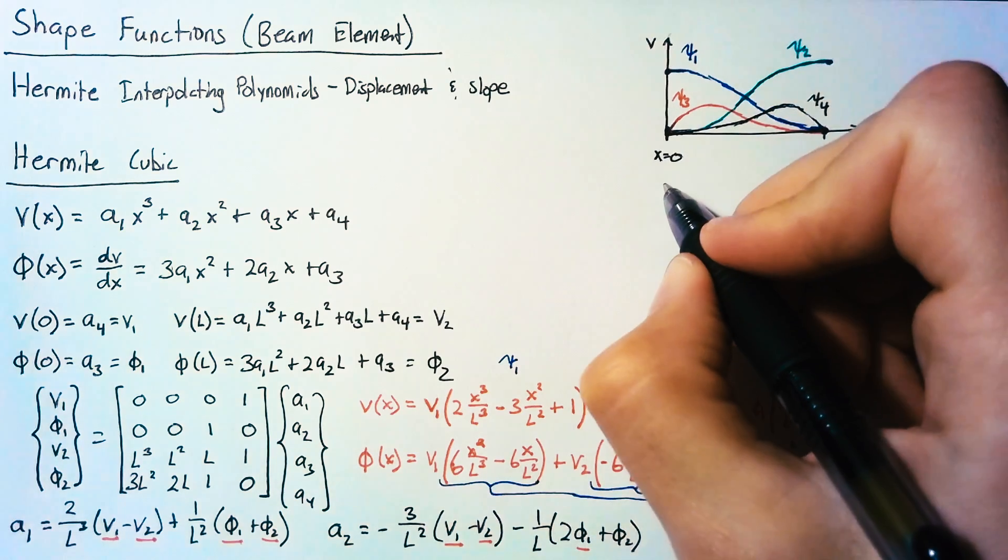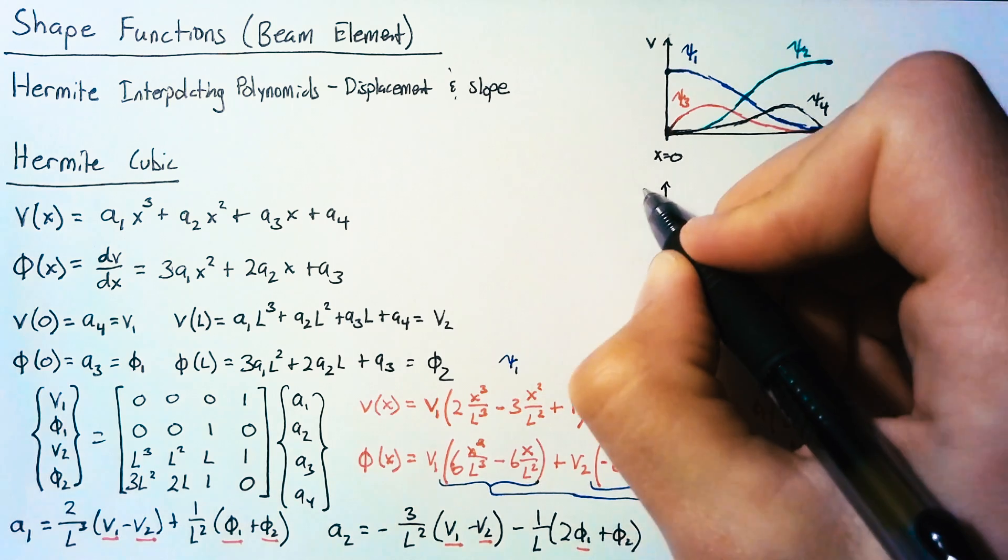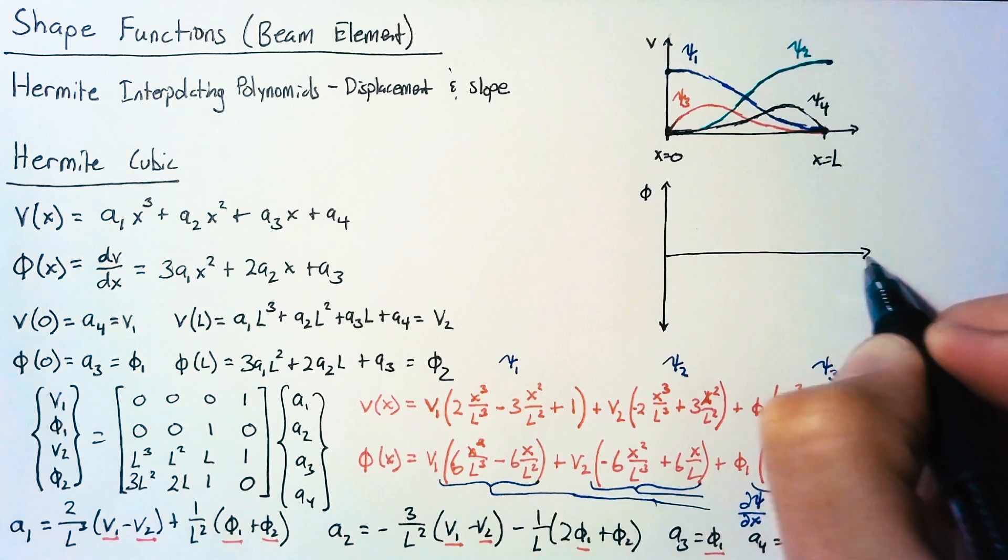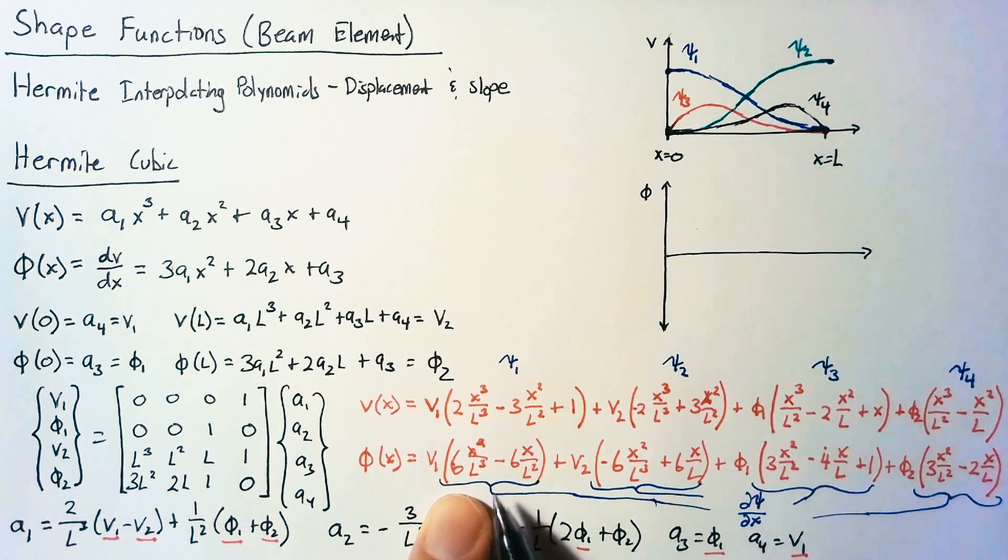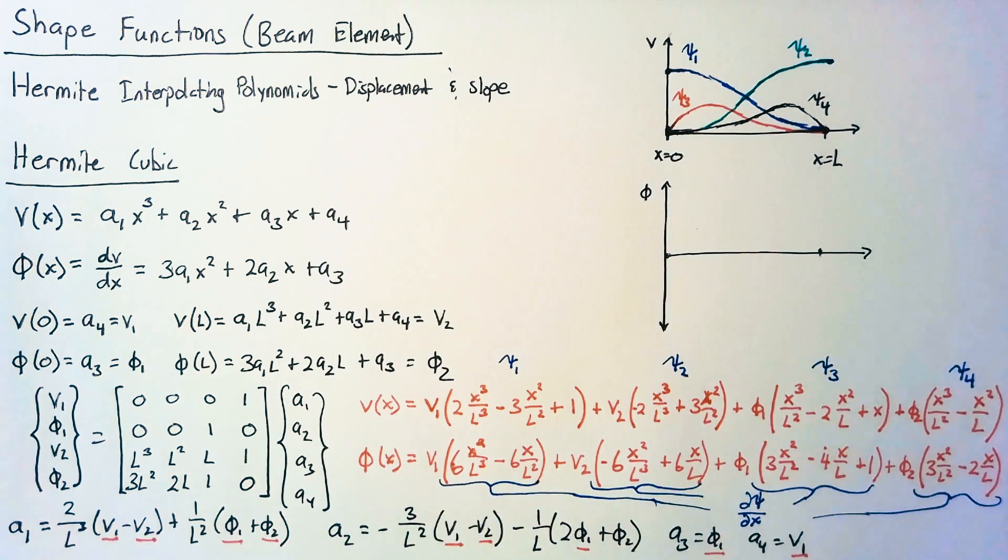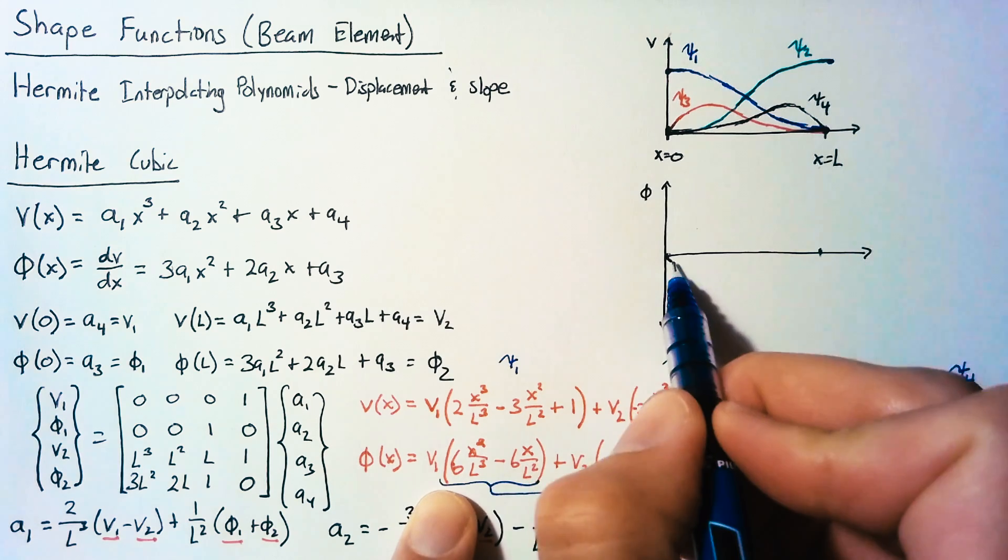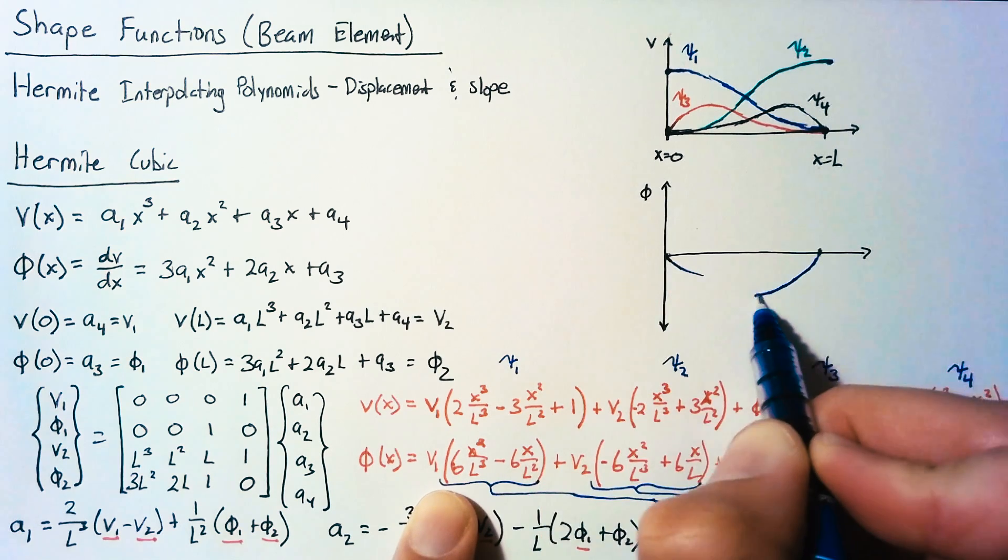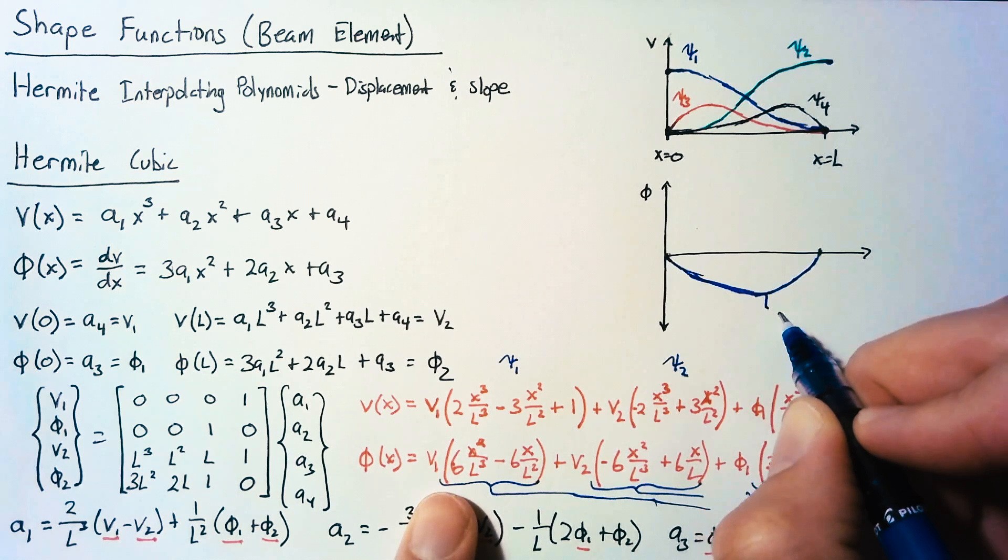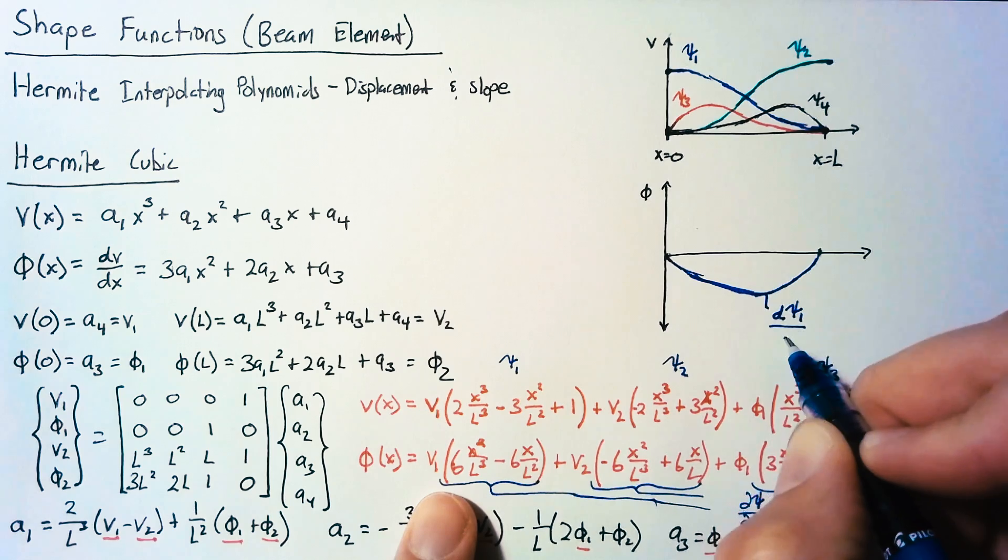Now it's also helpful to go ahead and plot the slope of these shape functions. So let's go ahead and look at phi as well. Our phi1 is going to be 0 at both x equals 0 and x equals l. But it's going to have a positive curvature, which means that our final value should look something like this. And this was our first derivative of psi1 with respect to x.